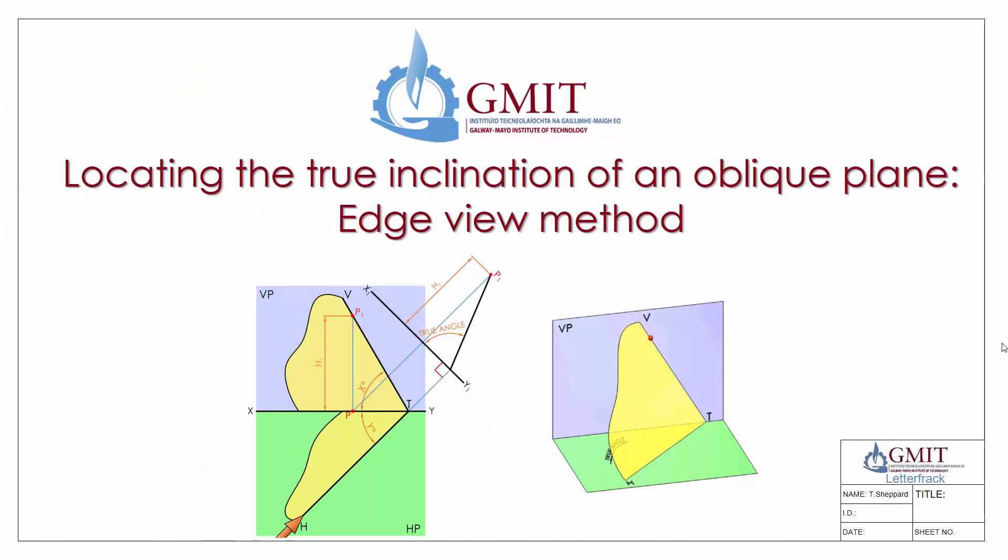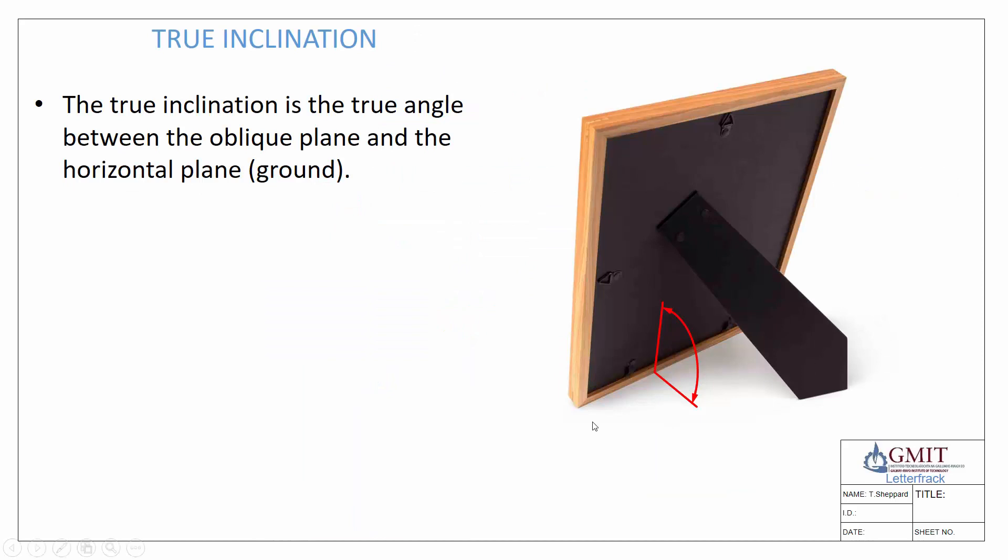Hello and welcome back to our webcast series on the topic of plane and descriptive geometry. In this video we're going to locate the true inclination of an oblique plane using what's known as the edge view method. We'll begin by first looking at a quick explanation of what the true inclination of two planes actually is. The true inclination is the true angle between the oblique plane and the horizontal plane.